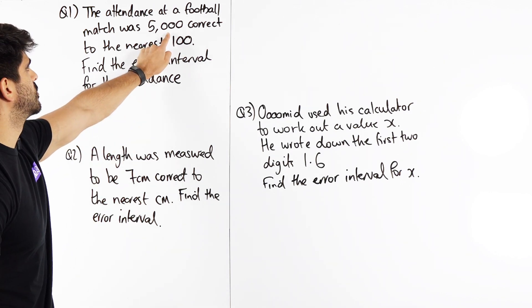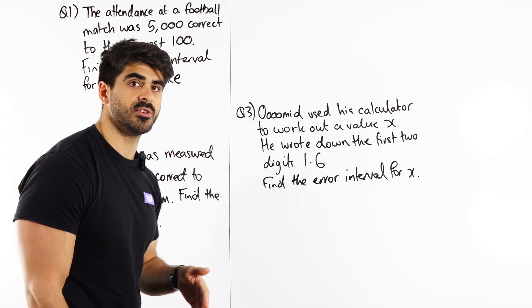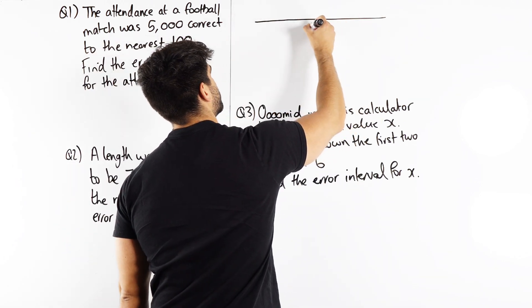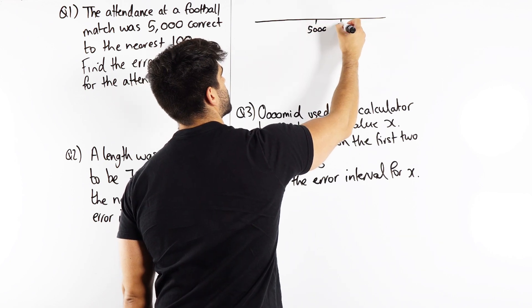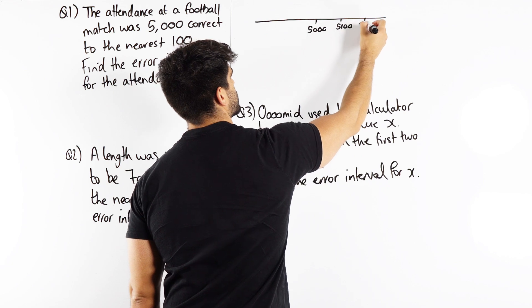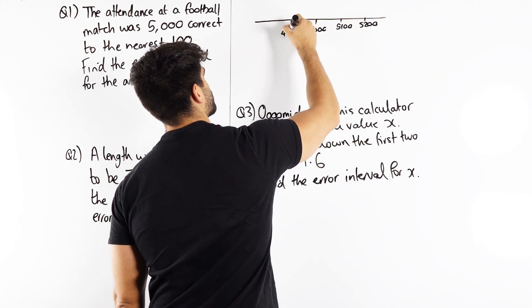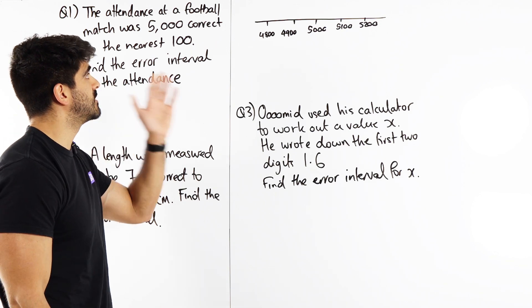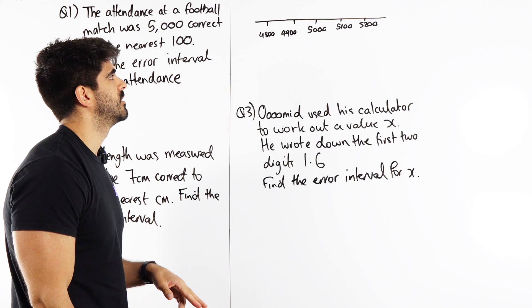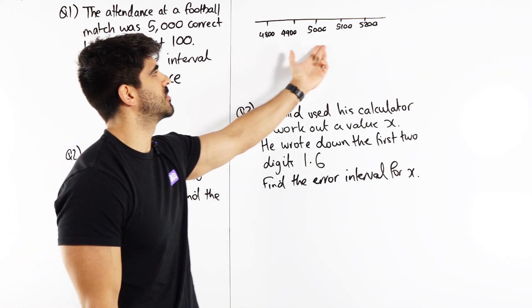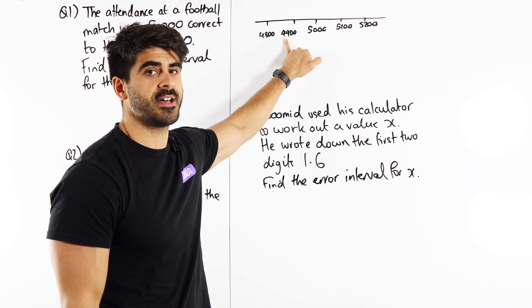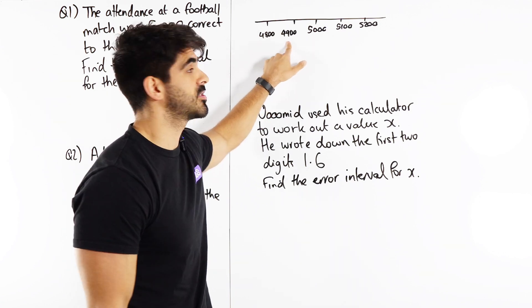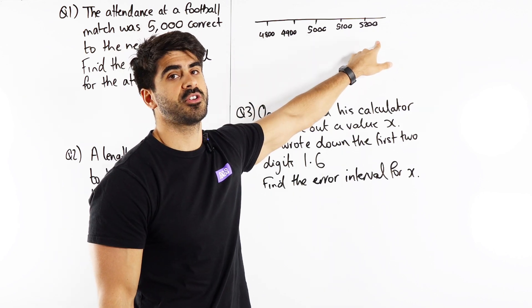So 5,000 was correct to the nearest 100 meaning the actual attendance was rounded to the nearest 100. So if we think about number line here we have 5,000 then we have 5,100, 5,200 here, 4,900, 4,800 etc and we're thinking which one of these values would round to 5,000 to the nearest 100. Well these are all hundreds so for example if we look at this that does not round to 5,000 to the nearest 100. So this just stays the same to the nearest 100. In fact all of these stay the same to the nearest 100 so we're going to have to look even deeper.